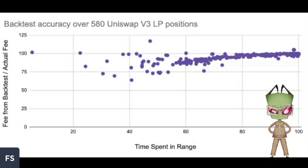So you're providing twice as much capital to the current trading happening within that range, which means you're collecting twice the trading fees as the person providing a 10% range — dollar for dollar.